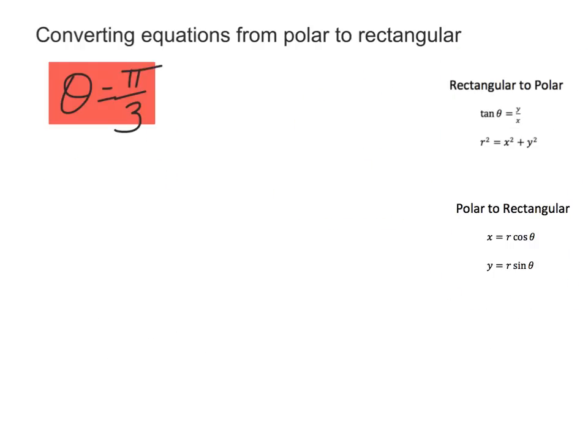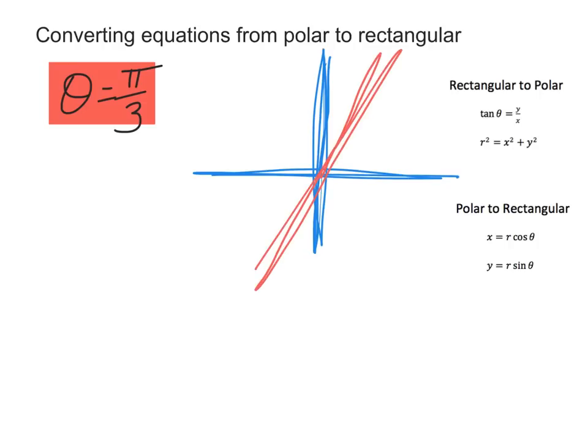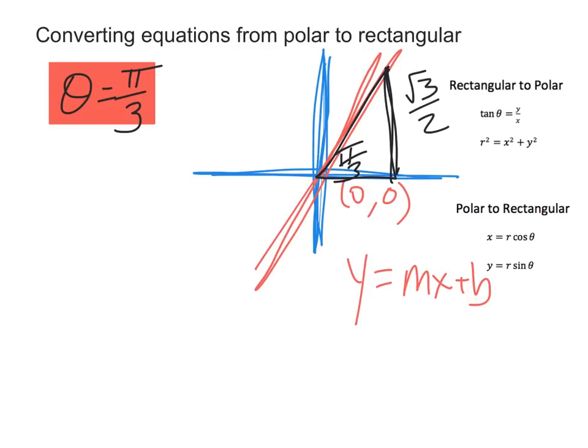On this one, we're given that theta is equal to pi over 3. So if we keep in mind what that means, that tells us we're looking at the angle pi over 3, something like this. So it's going to be this line, and if we want to write the equation of that line, we can say y equals mx plus b. We know that it's passing through the origin, and we know our unit circle hopefully. And if you think about at this pi over 3, you went up root 3 over 2 and over 1 half.